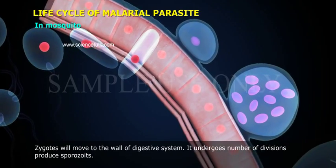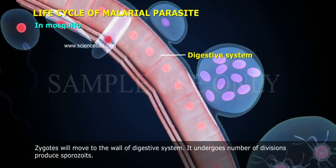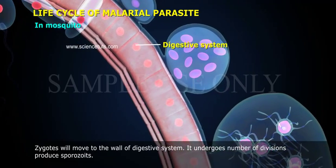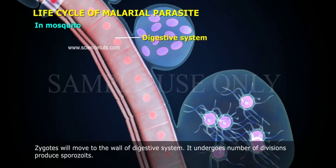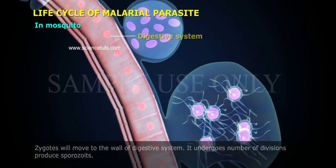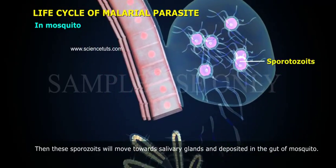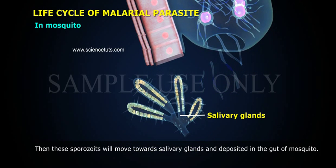Zygotes will move to the wall of the digestive system. They undergo a number of divisions to produce sporozoites. These sporozoites will then move towards the salivary glands and are deposited in the gut of the mosquito.